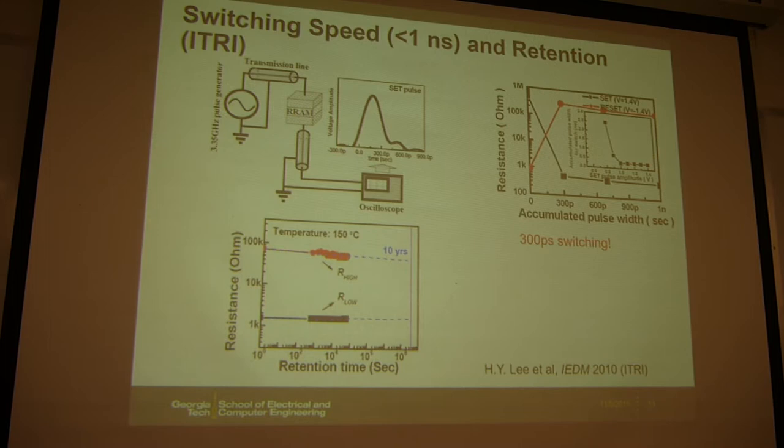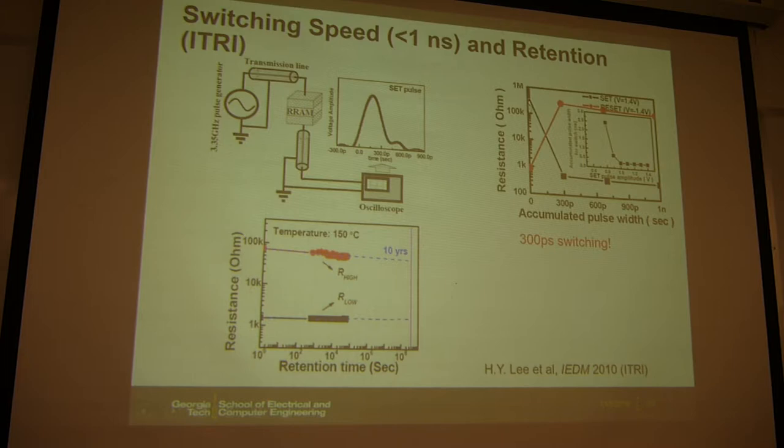They also tested the switching speed through a dedicated setup. The fastest set pulse they applied was 300 picoseconds. After 300 picoseconds, the resistance changes under those voltage conditions — confirming that switching is successful at below-nanosecond speeds.